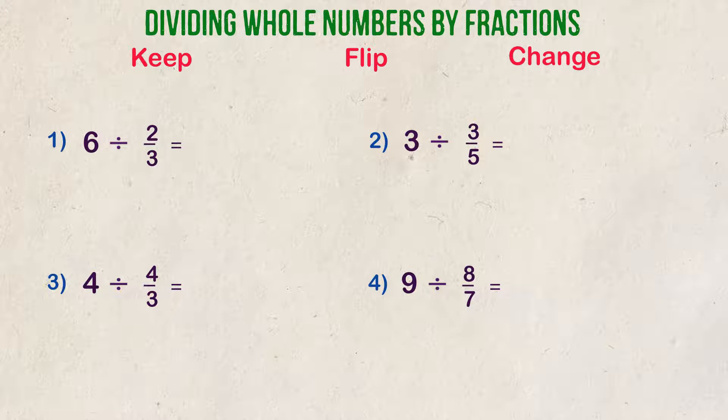Example 1. Divide 6 by 2 thirds. The KFC rules apply when dividing fractions by fractions. So, let's take our whole number of 6 and change it into a fraction by placing it over 1. We can now rewrite our problem to be 6 over 1 divided by 2 thirds.